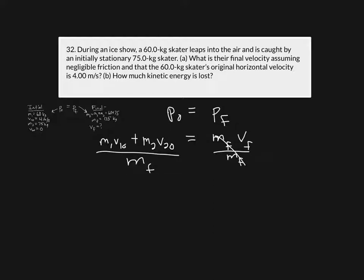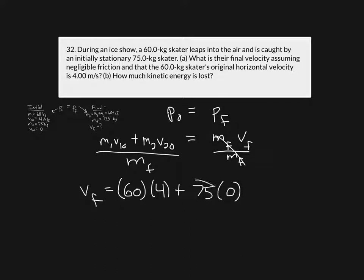Now we plug in the numbers: v_final equals (60 kilograms times 4) plus (75 kilograms times 0), all divided by 135 kilograms. The second term cancels out, and plugging this into a calculator gives a final velocity of 1.78 meters per second.